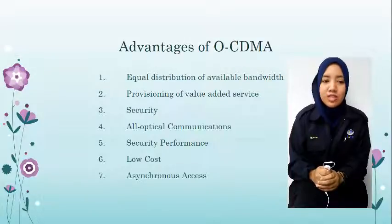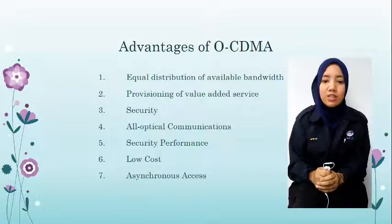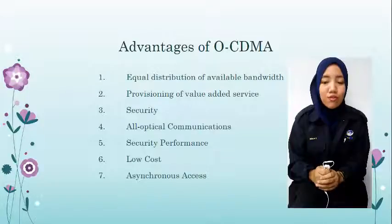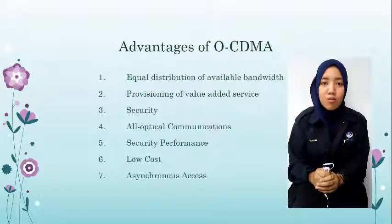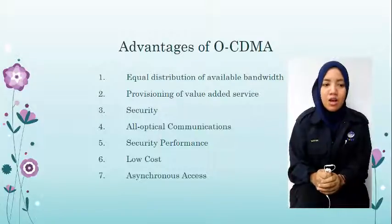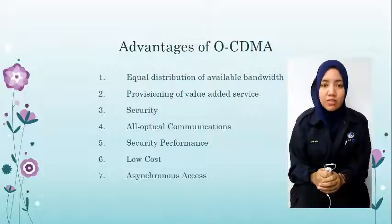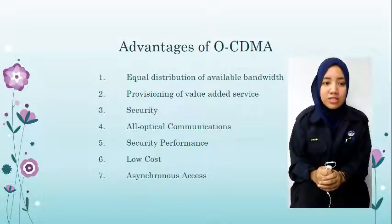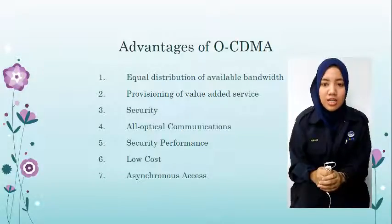Number three: security. If an OCDMA system is considered with 41 wavelengths and 961 time chips, it will require 1,350 years trying all possible combinations before the code could be broken. Number four: all-optical communication. OCDMA systems encode and decode signals from different users optically. The messages are converted to optical signals at the source end and are retrieved as electronic signals after transmission is completed.